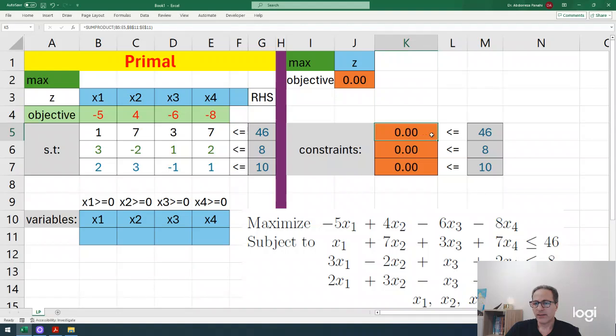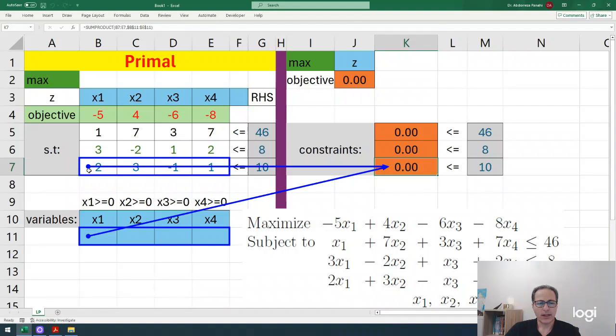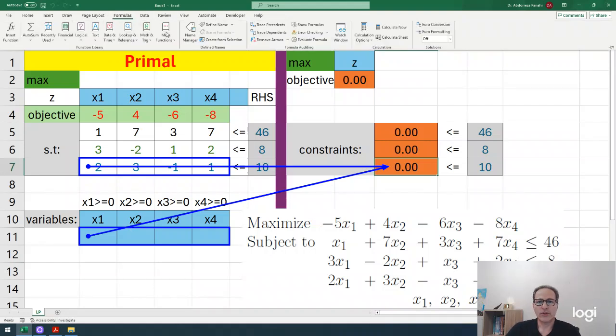Now I can copy this formula down using the plus sign in the corner. To verify, I select this cell and trace precedents in the formula tab. It shows this array and this array - the third constraint coefficients and the variables, correctly done. If you see the array moving down, you won't get the correct answer, so check your work. Now I remove the arrows.